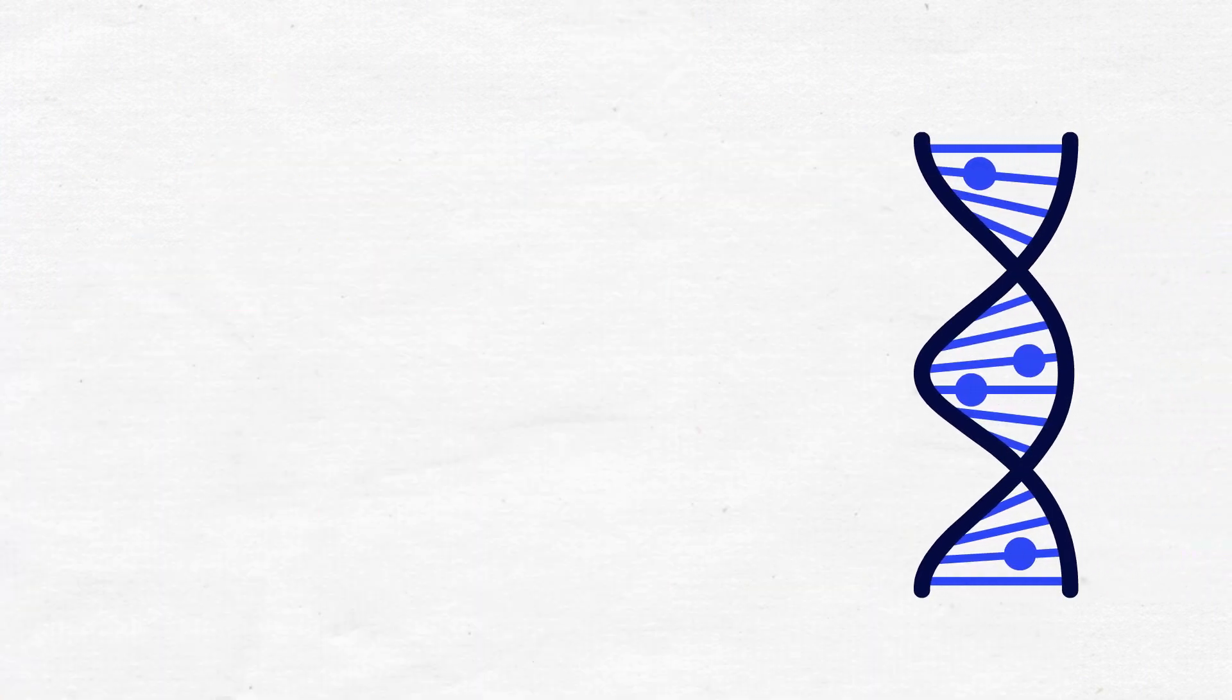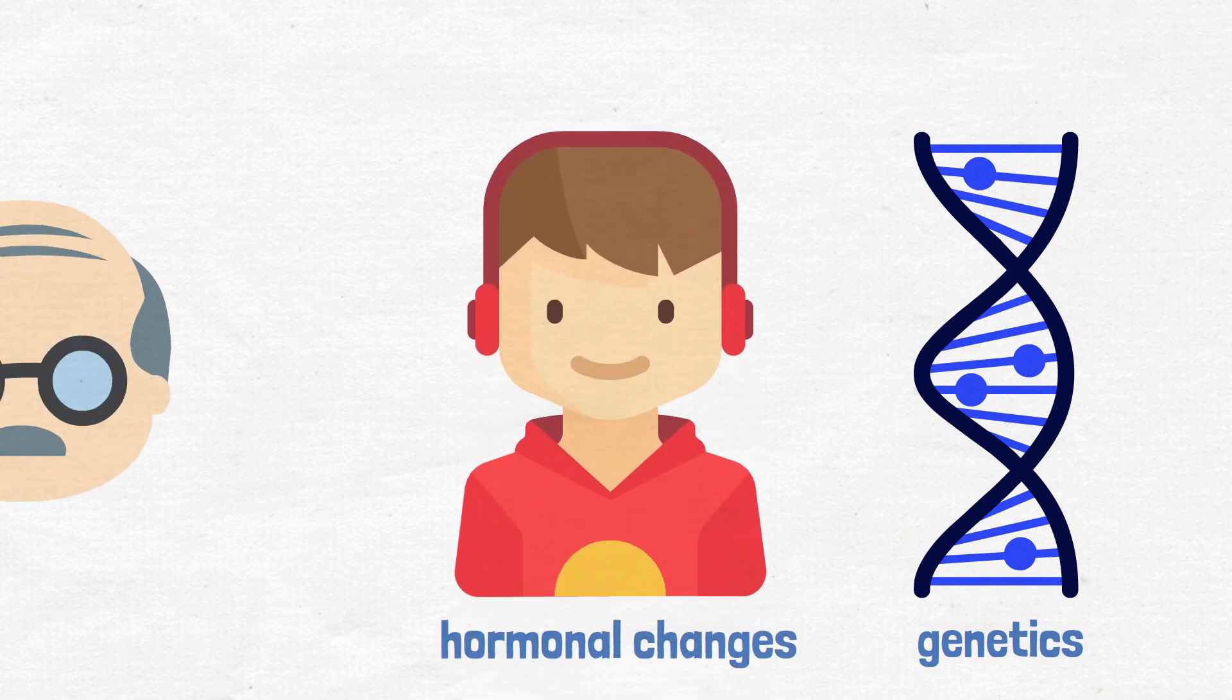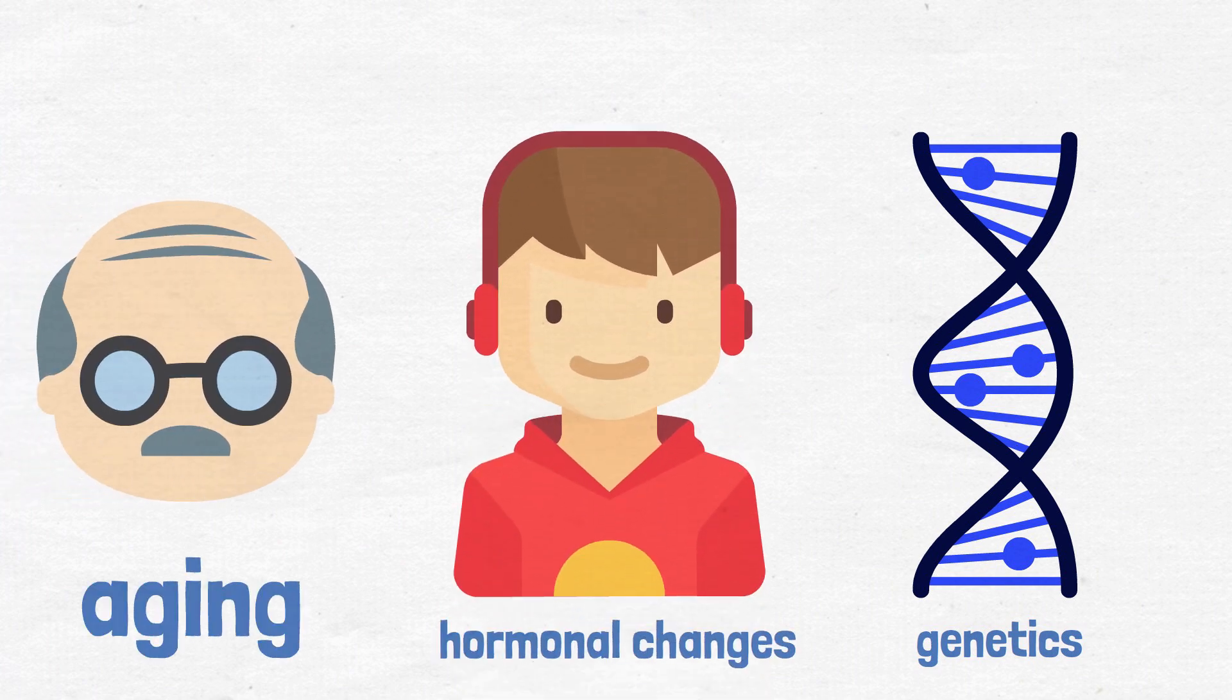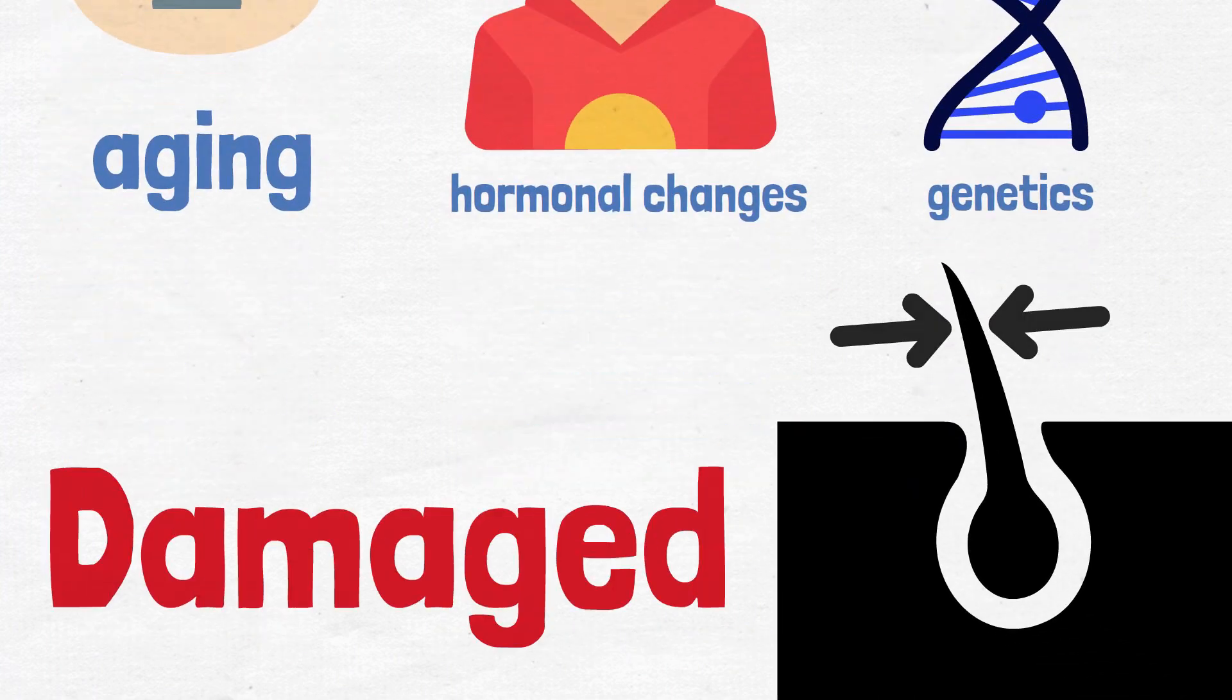Hair loss can occur due to a variety of factors including genetics, hormonal changes, and aging. When hair follicles are exposed to these factors, they can become damaged or shrink in size.